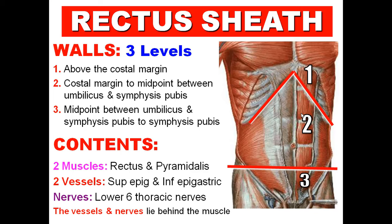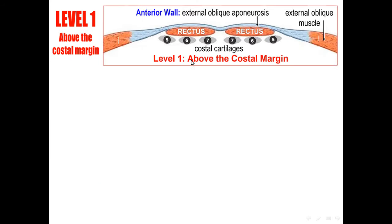Level 1 is above the costal margin. The anterior wall is the external oblique aponeurosis only. The posterior wall is actually deficient — the rectus muscle lies directly on costal cartilages number 5, number 6, and number 7. So above the costal margin, the posterior wall of the rectus sheath is formed by the 5th, 6th, and 7th costal cartilages.